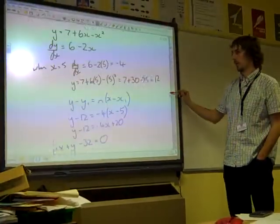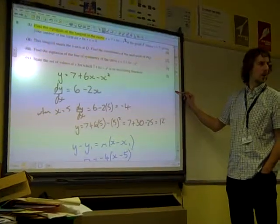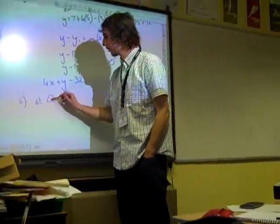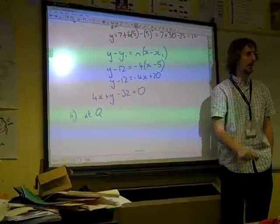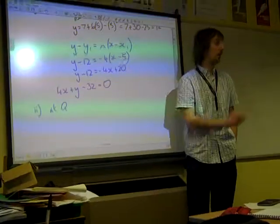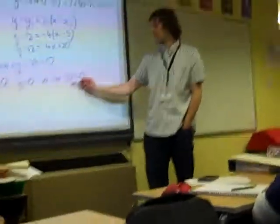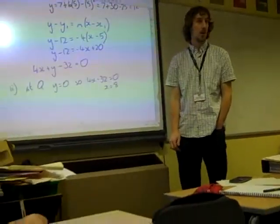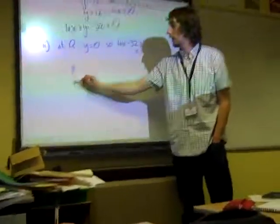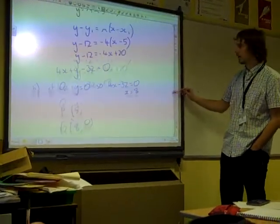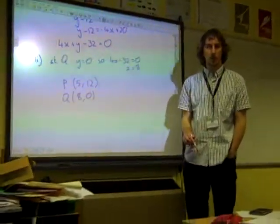Part 2. The tangent meets the x-axis at Q. Find the coordinates of the midpoint of PQ. It meets the x-axis at the point Q. So what happens when a line meets the x-axis? Y equals 0. So at Q, y = 0. So 4x - 32 = 0. So x is 8. So we've now got Q as the point (8, 0). P is the point (5, 12).